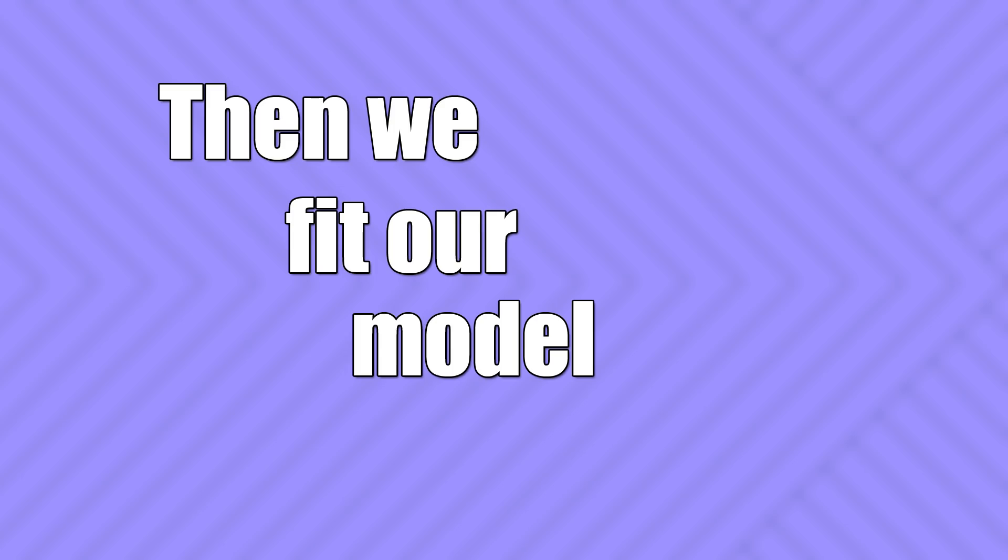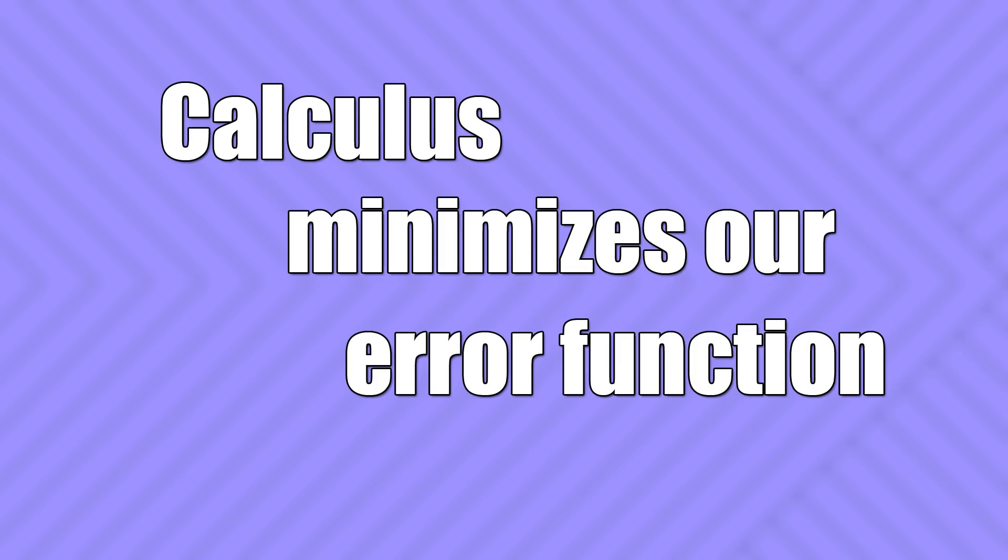So we've created this model now and it seems okay — it does the job. But we need to optimize it, to make it the best version of that model that it can be. We can measure how good this model is by using something called an error function. The bigger the error function is, the worse the model is at predicting what you want it to predict. So we use calculus to find the optimal way of reducing that error function. That takes you through very quickly the maths you need and why you need it.